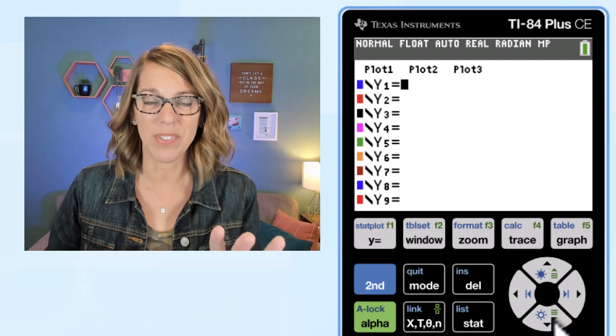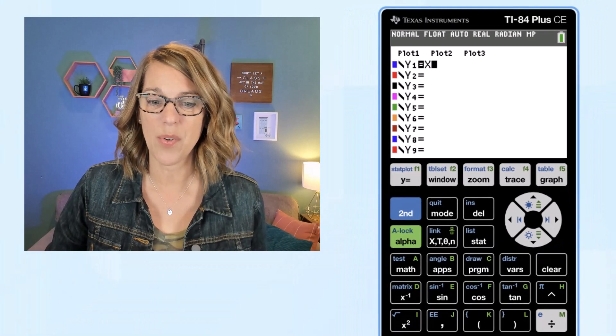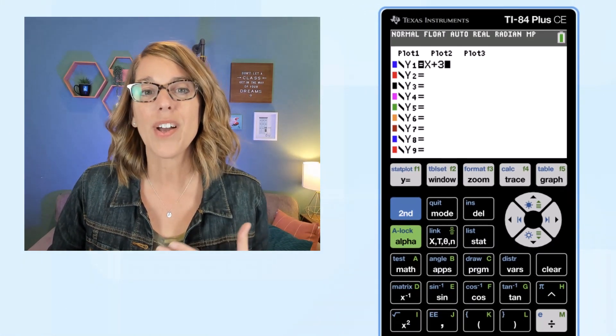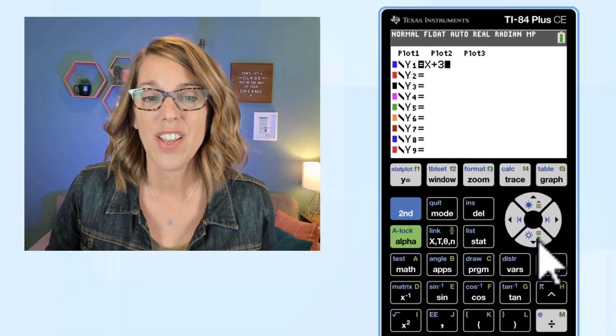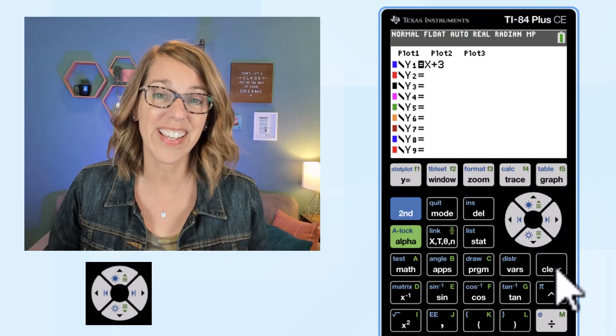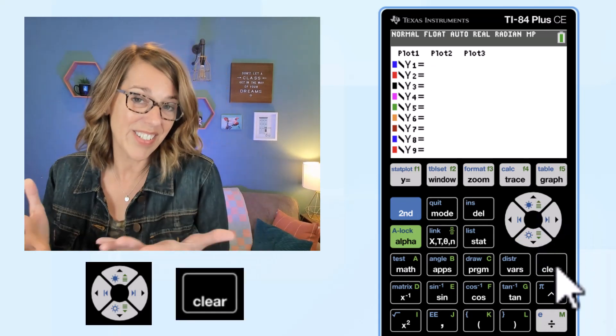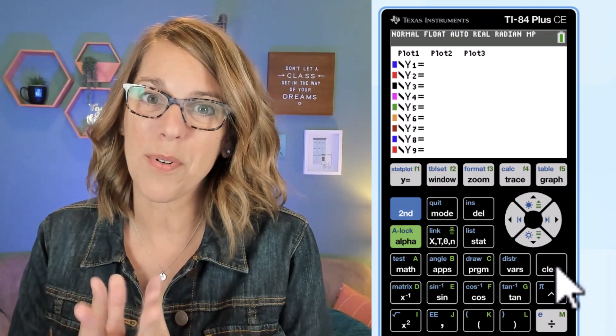So I've got no plots there and if you happen to have an equation up here I want you to also clear that equation. You can arrow up and down to get to the equation and then hit your clear button. Okay so now we're all set. Let's go ahead and put a parabola in.